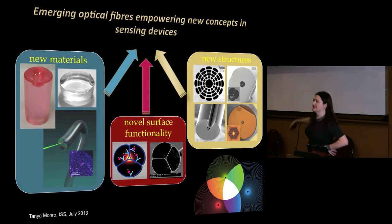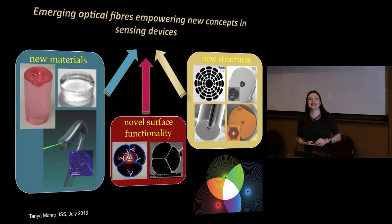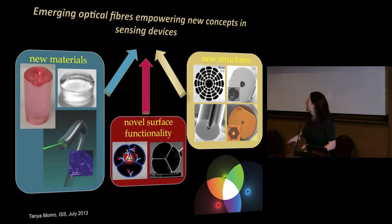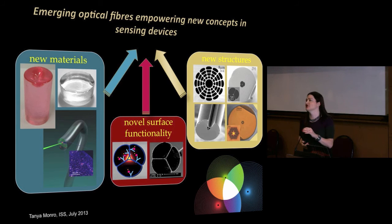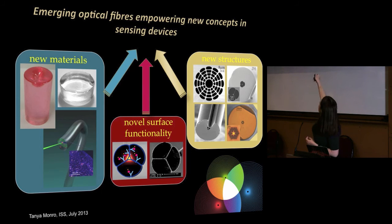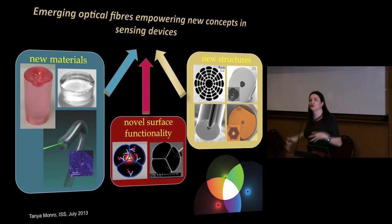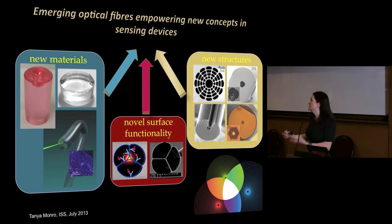The third leg of the stool is doing clever things at the interfaces — at the interfaces between the glass and the air within these structures. You can put on smart chemistry and smart biology, and I'll talk about that in my lecture this afternoon. So the three things we're bringing together are: new optical physics and new concepts in optics, new concepts in material science and nanoscience, and new chemistries. When you bring all those things together, you can control and generate photons in new ways and interact those photons with things you want to measure.